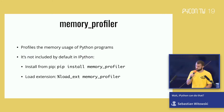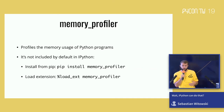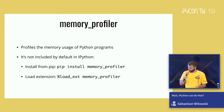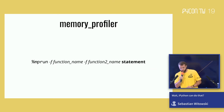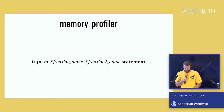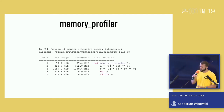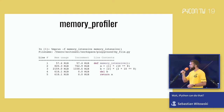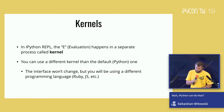The last profiler I want to mention is the memory profiler. As the name suggests, you use it to profile memory usage. Again, install it with pip and load it as an extension. You run it the same way as the line profiler — provide the statement and the name of the function you want to profile — and you get output showing how memory usage changed between each line of your code.